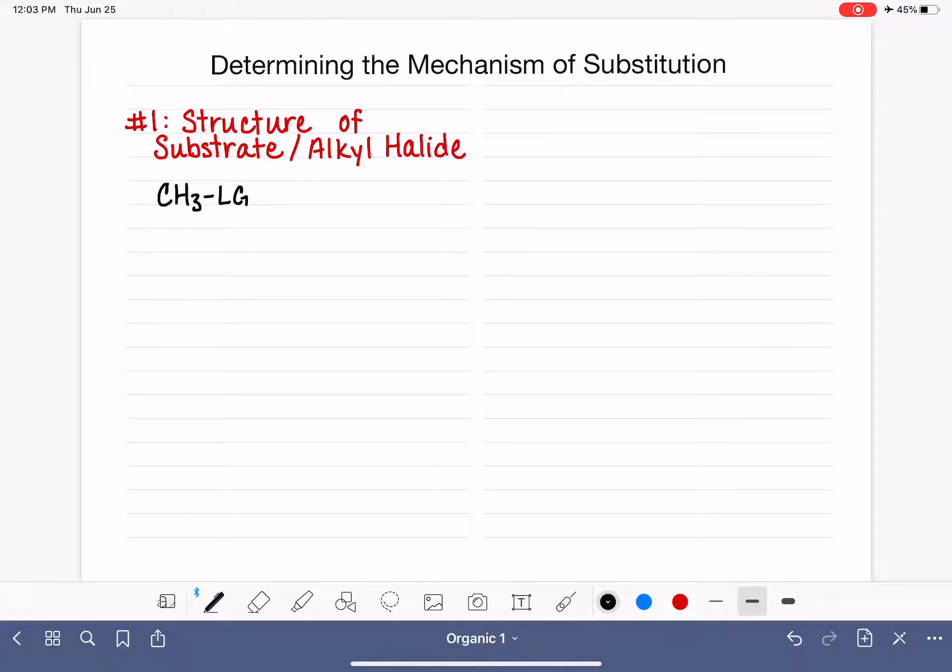When we have that type of molecule, because we cannot form a carbocation on a methyl carbon, it's too unstable, this particular type of substrate will only do the SN2 mechanism. So anytime you see this type of molecule, three hydrogens on the carbon that's holding the leaving group, your only option is to do SN2.